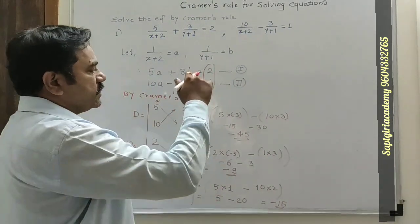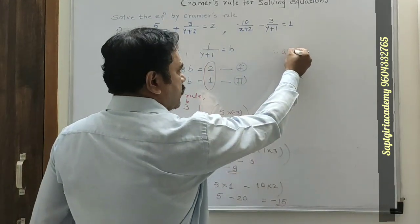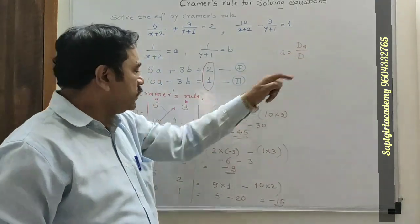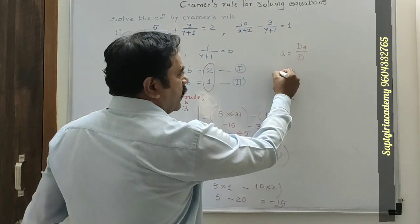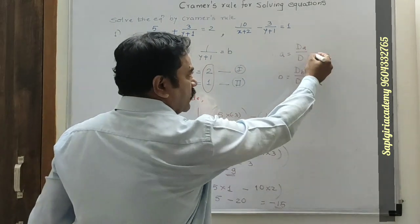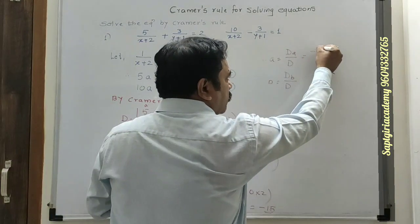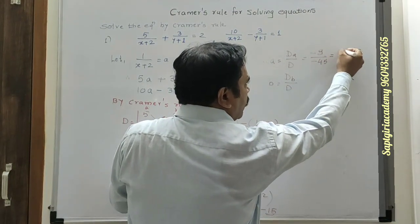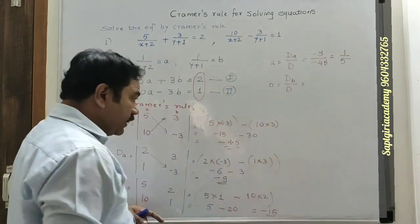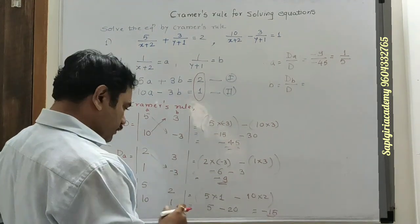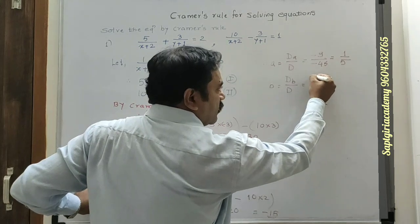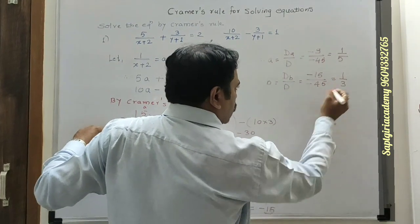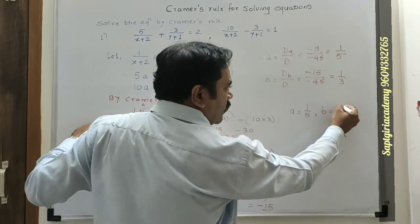Now for solving, we require a equal to Da by D, and b equal to Db by D. So for a, we take Da upon D: minus 9 upon minus 45, which gives 1 upon 5. So a is equal to 1 upon 5. And b is equal to Db upon D: minus 15 upon minus 45, giving b equal to 1 upon 3.